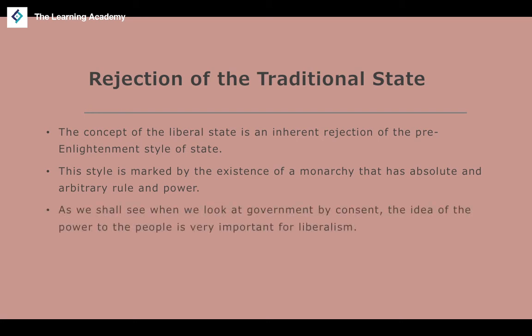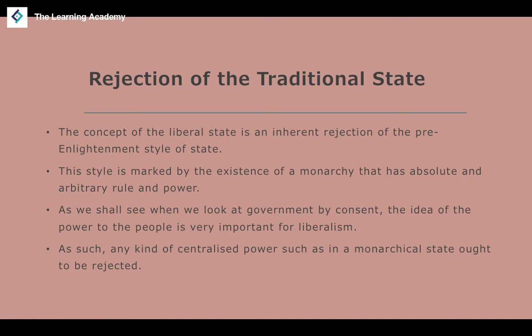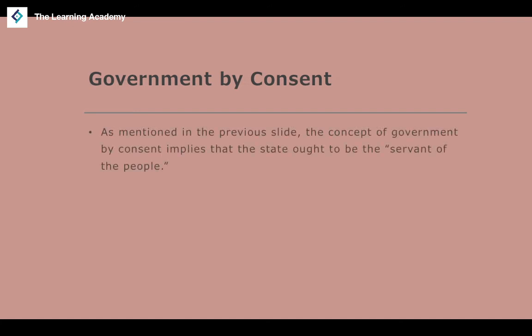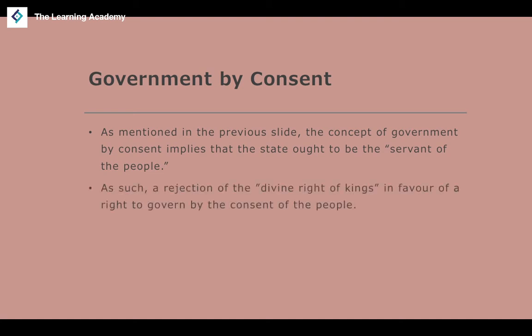The concept of government by consent implies that the state ought to be the servant of the people. This is a direct rejection of the traditional monarchical understanding of the divine right of kings — where the power to rule comes from God. Instead, the power of government comes from the people, by their consent. Rather than a top-down approach where power comes from above, this is a bottom-up approach.